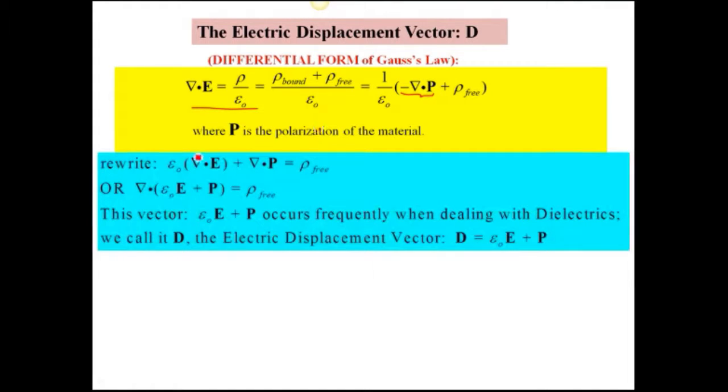If we take the term that had the divergence of E and just add del cross P, obviously taking into account the epsilon zeros, we then end up with this quantity here equaling the free charge density. So all we've done is solve this for the free charge density. Bringing this into the quantity which we're going to take the divergence of, then we see that we've got some vector here. This vector shows up frequently when we have dielectrics. So we give it a name. It's called D, capital D, and it's the electric displacement vector.